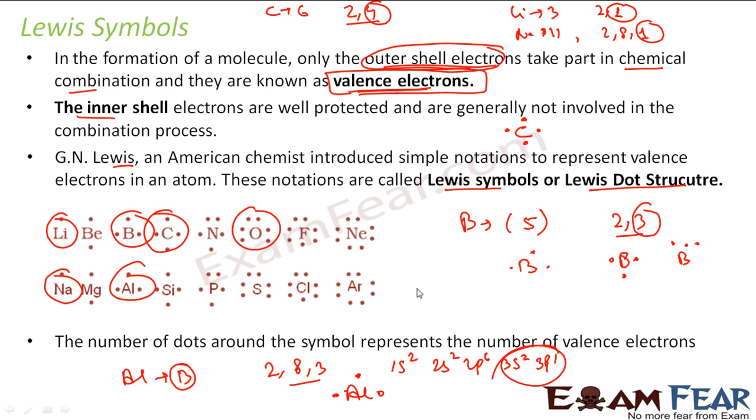If you want oxygen, oxygen's atomic number is 8. 1s2, 2s2, 2p4. The outermost electron, the valence shell is number 2, it has 6 electrons. So write O and put 6 electrons.